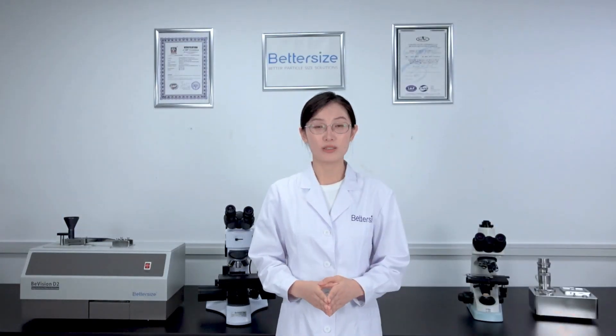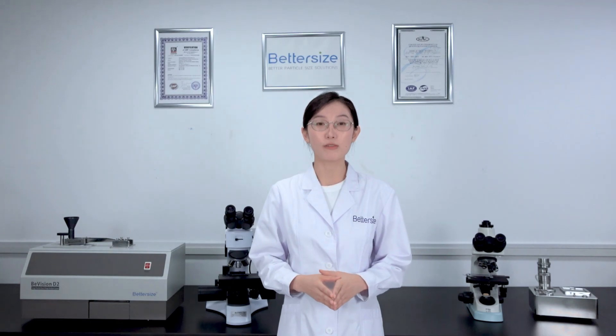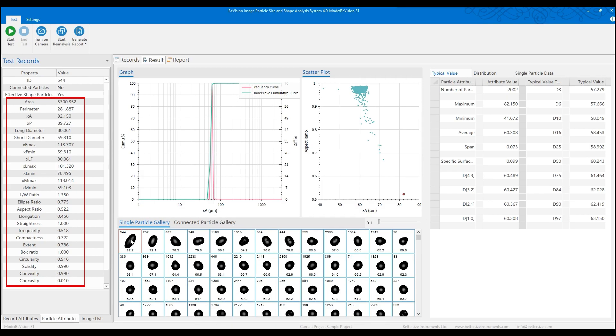Most importantly, the BeVision series comes with our latest powerful BeVision software. It offers 24 different particle size and shape distribution information, enabling comprehensive and reliable characterization of the sample material.